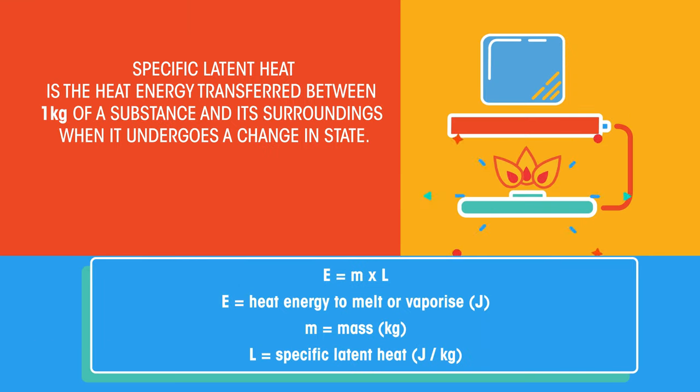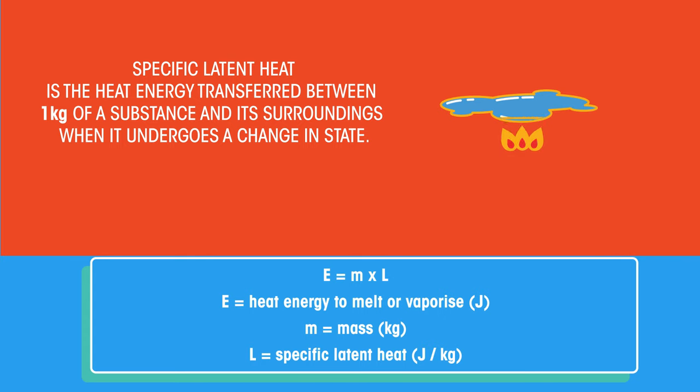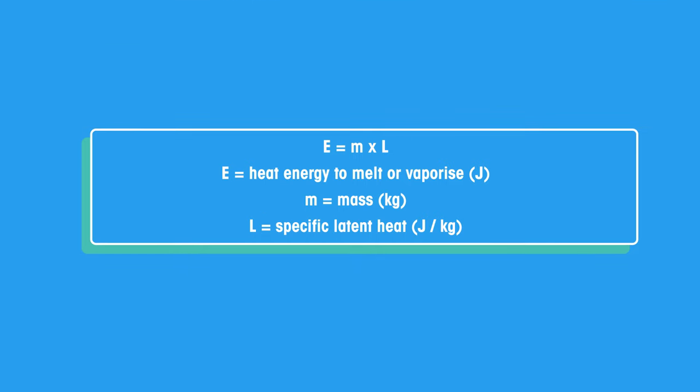So in summary, specific latent heat is the heat energy transferred between one kilogram of a substance and its surroundings when it undergoes a change in state. There is no change in temperature, and we calculate it using this equation.